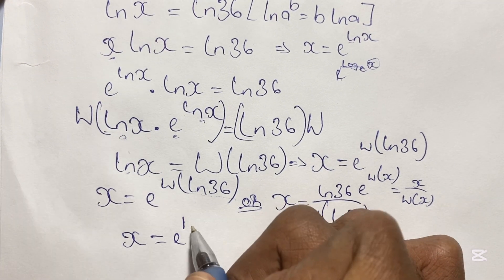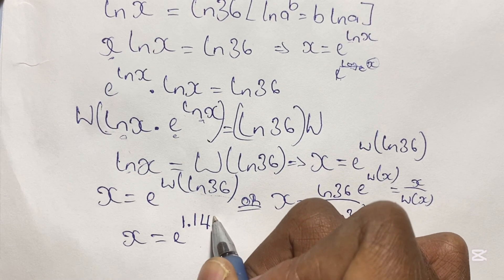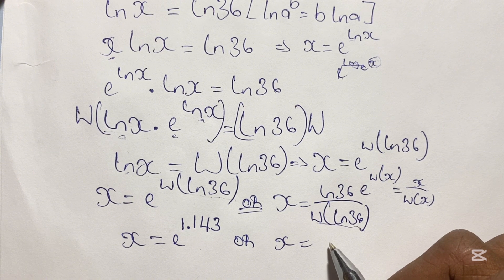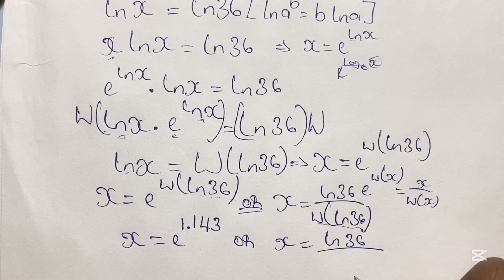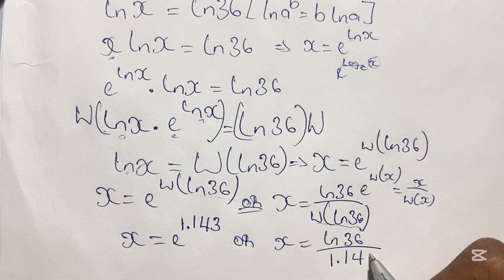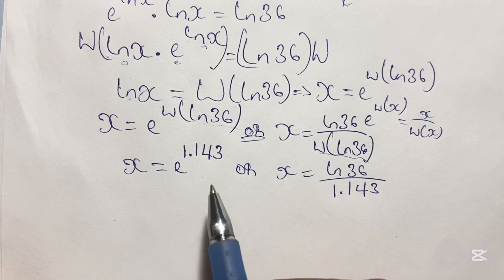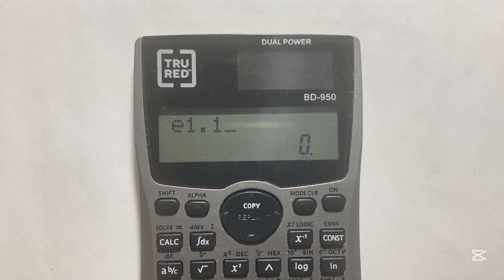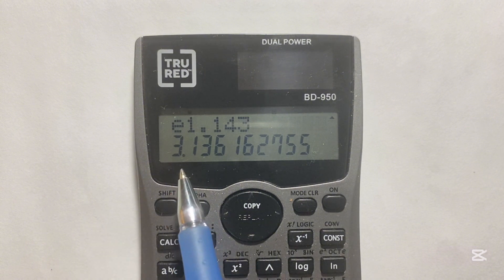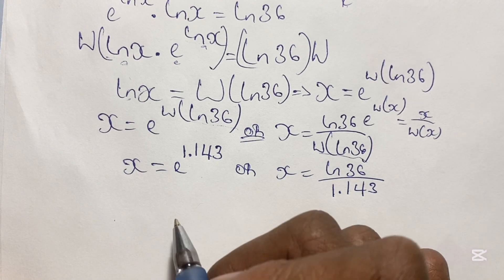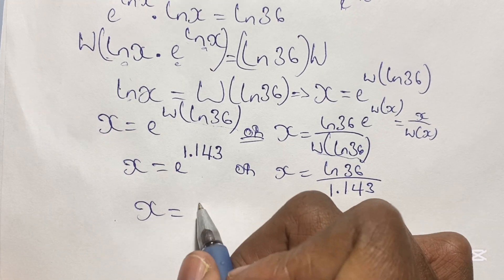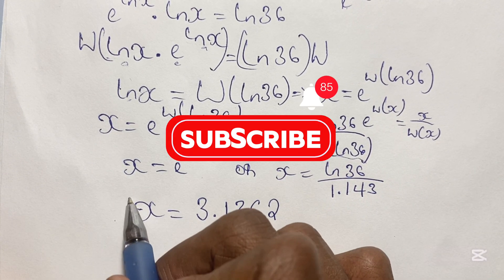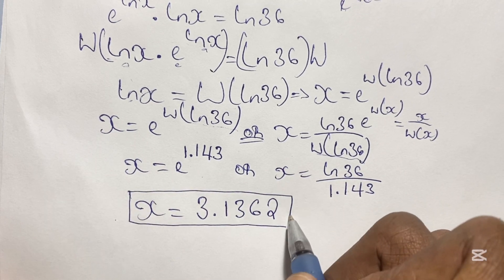So then x is equal to e to the power of 1.143. We also have x equal to ln 36 over 1.143. Plugging e to the power of 1.143 into our scientific calculator, we get x is approximately equal to 3.1362. So our value of x is 3.1362.